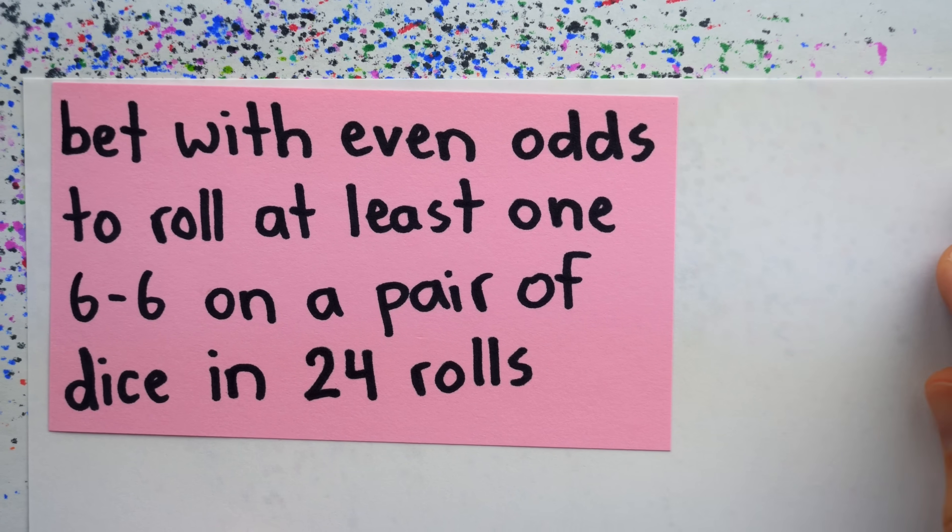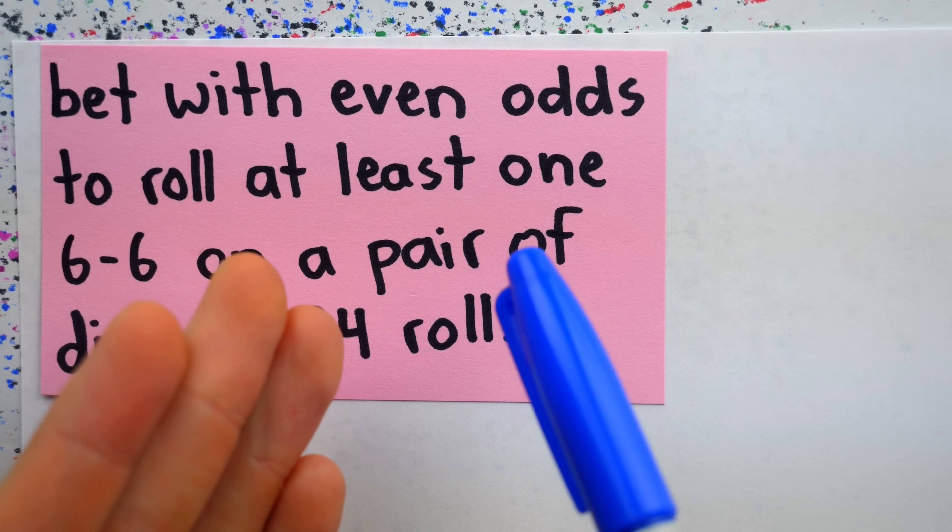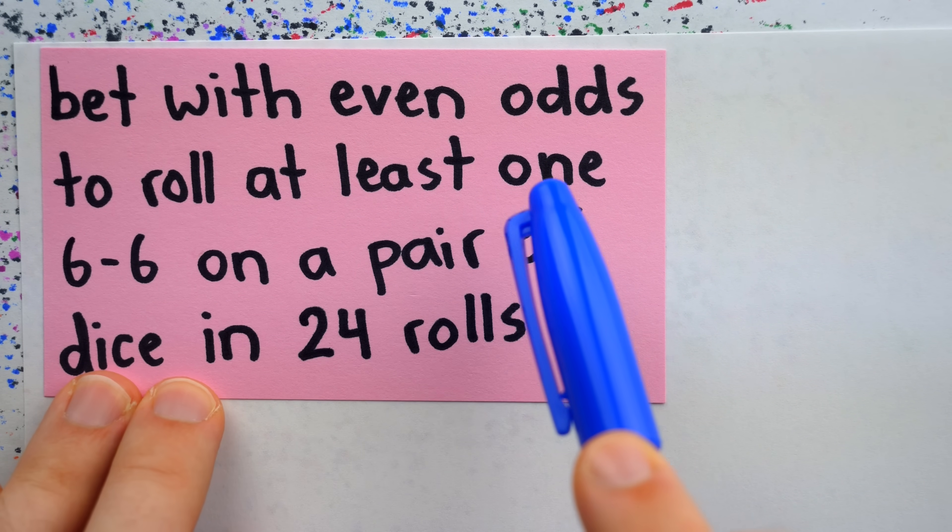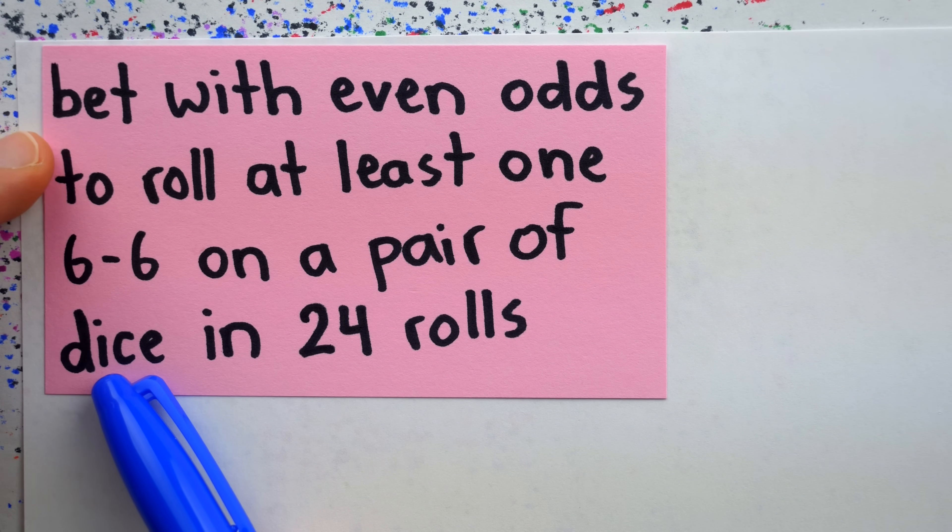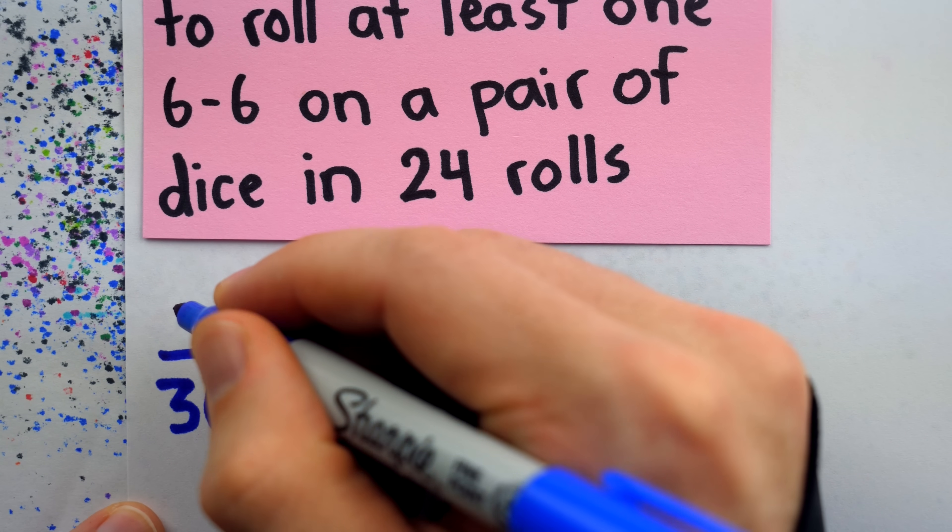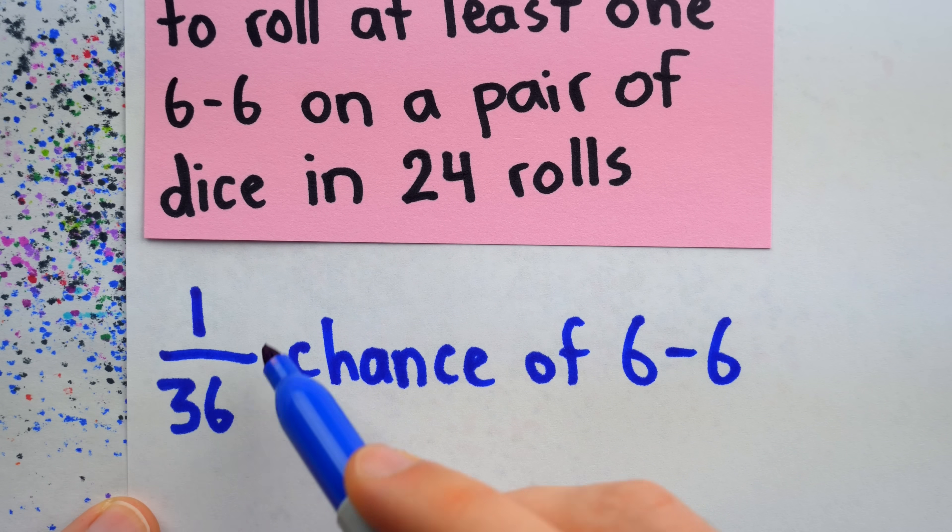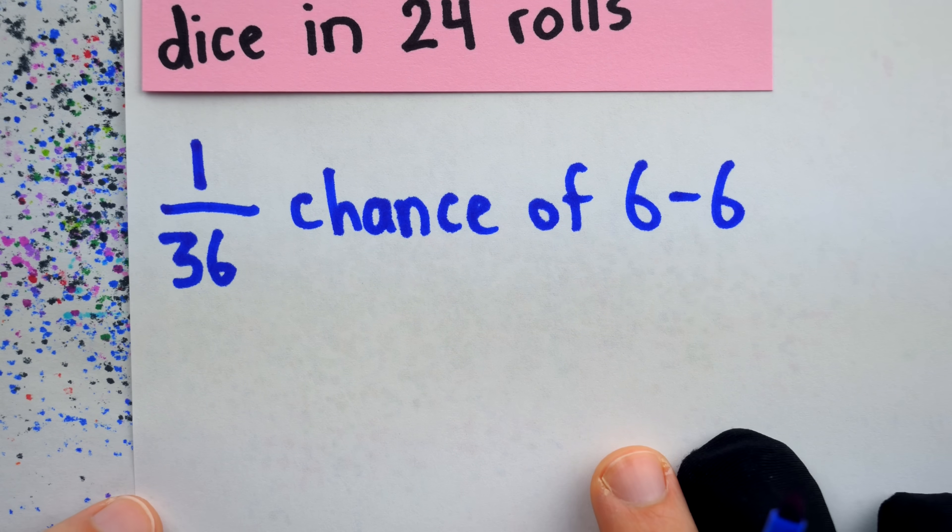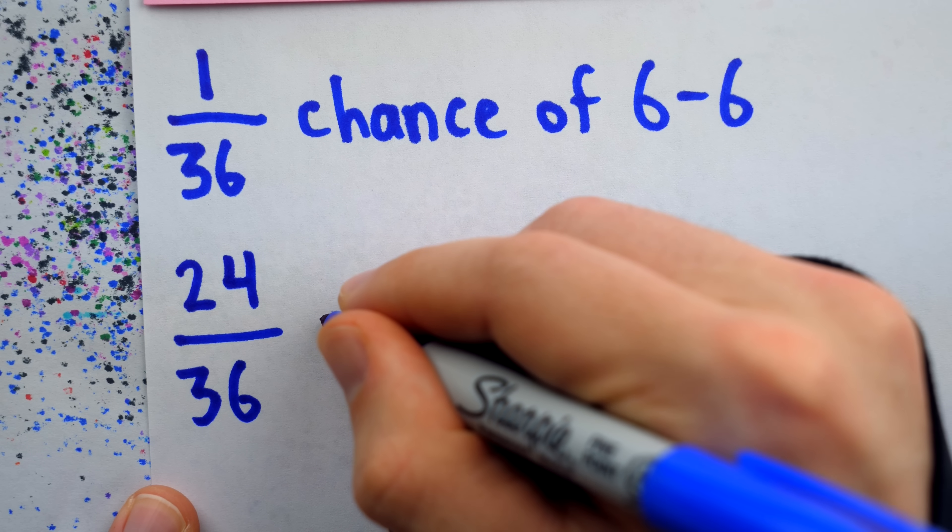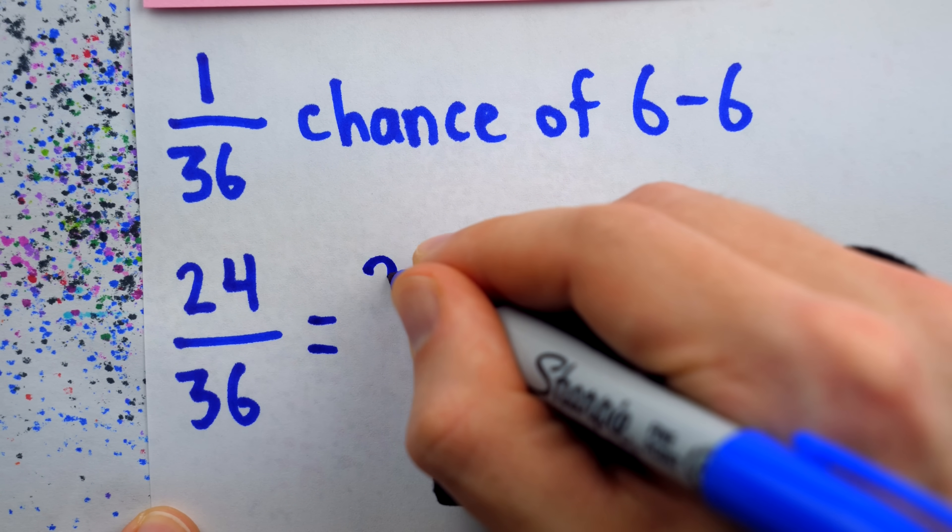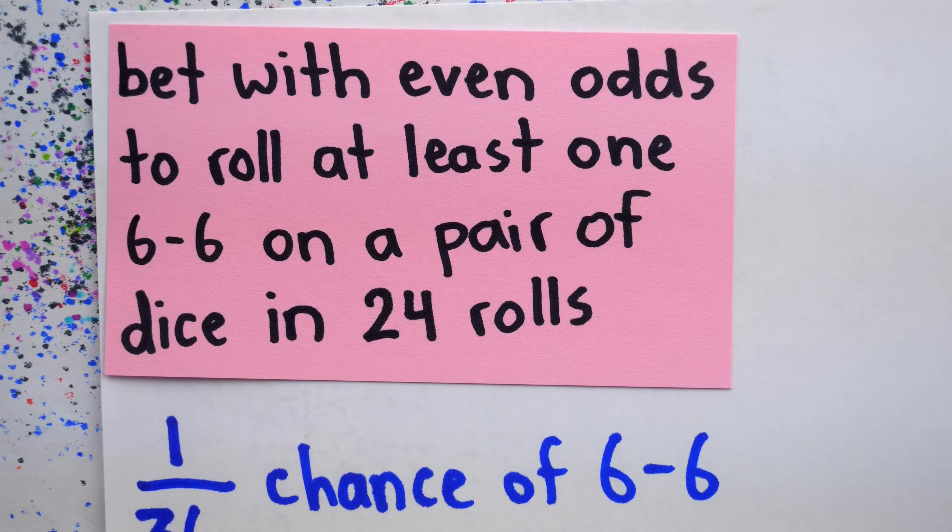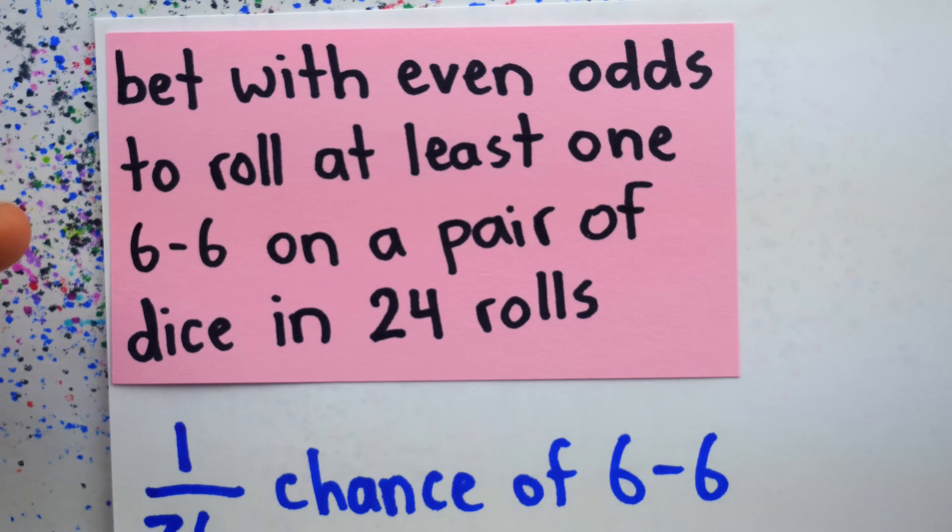His trouble came from a second game, in which he figured his likelihood of winning should be the same. But in reality, he was consistently losing money playing this game. In the second game, he bet again with even odds to roll at least one pair of sixes in 24 rolls of a pair of dice. He reasoned that there are 36 different ways that a pair of dice can come up, and only one of those ways is a pair of sixes, so his chances of winning on a single throw are one in 36. Since there's a one in 36 chance of rolling sixes in a single roll of a pair of dice, Demirei figured that in 24 rolls, there would be a 24 out of 36 chance of rolling at least one pair of sixes. Of course, if you reduce this fraction by a factor of 12, it again comes up to two-thirds. So again, he thought not only were the odds in his favor when playing this game, but they in fact should be exactly the same as the prior game. But he found himself winning this one, and consistently losing this one.